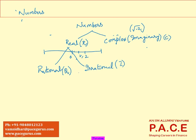Irrational numbers — sometimes people use the notation I, but essentially anything which is not rational is called irrational. How do we define something as rational? Any number which can be expressed in the form of p by q. For example, the number 3 can be written as 3/1, or 2.2 can be written as 22/10.